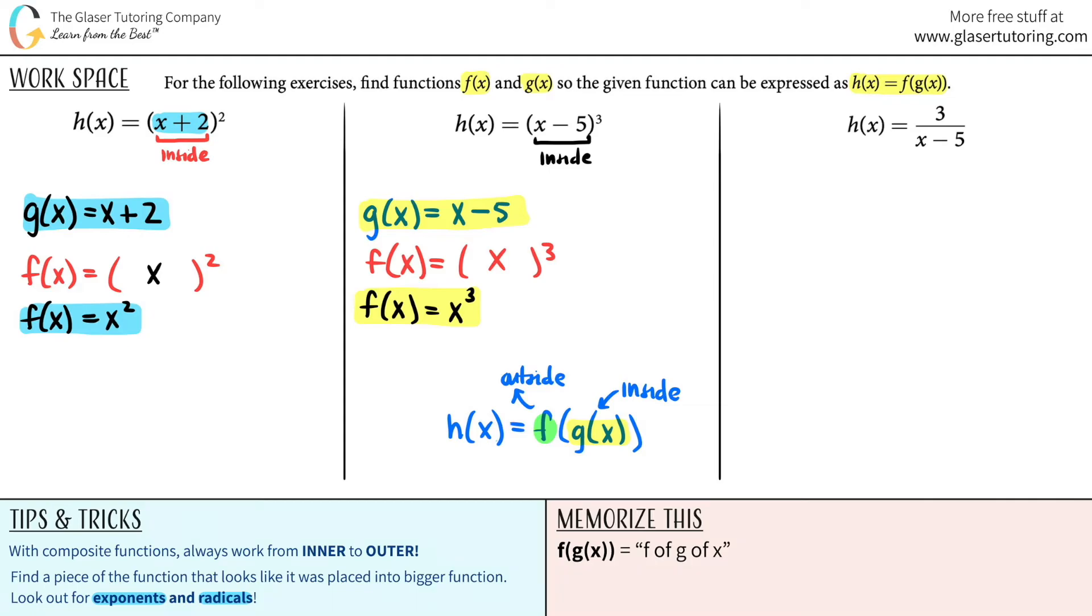h of x equals 3 over x minus 5. This one's a little tricky, right? Let's see. I don't really see anything that's inside, right? Because I don't see any parentheses, and I don't see any exponents. So I'm going to make it up.